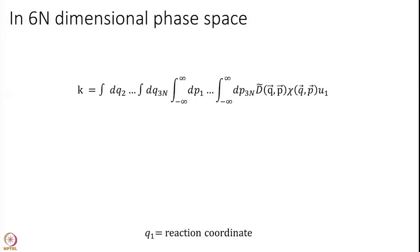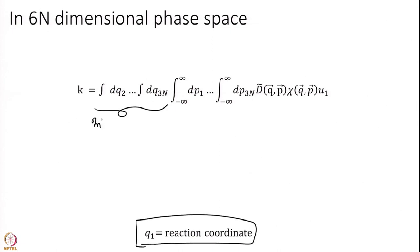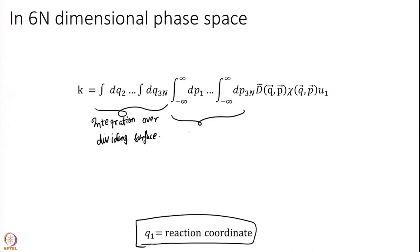In the last module we ended with this particular formula for the rate constant. We had integrated over all coordinates that are not the reaction coordinate. We have one coordinate that we call the reaction coordinate. This is an integration over the dividing surface — I am sitting at a transition state, one coordinate is my reaction coordinate, every other direction is perpendicular to this and constitutes my dividing surface. I am integrating over all momenta.